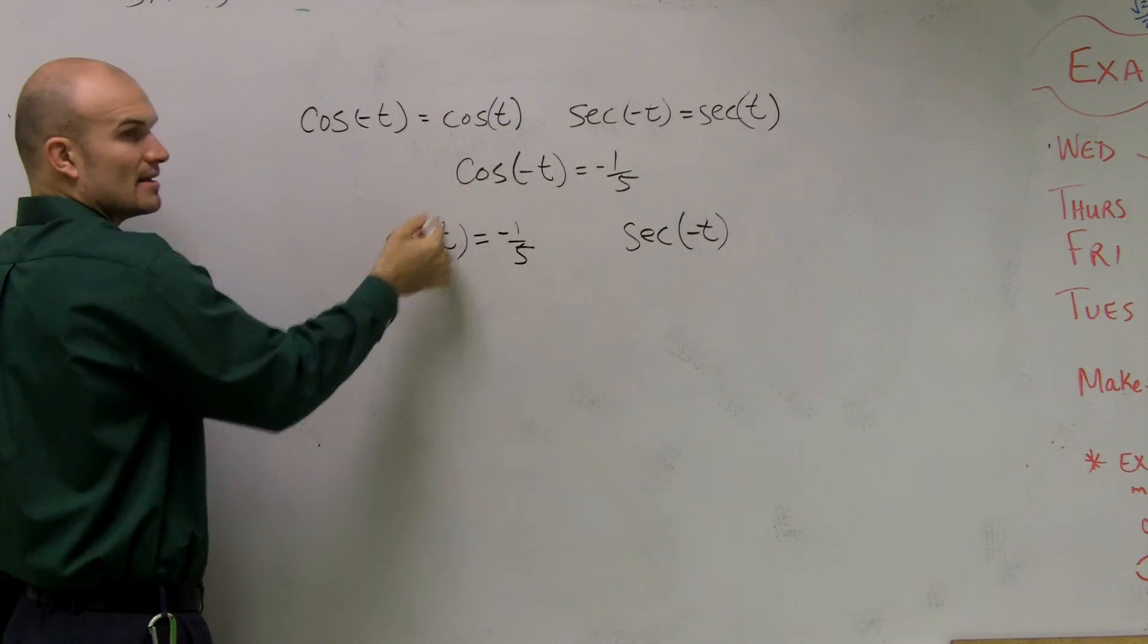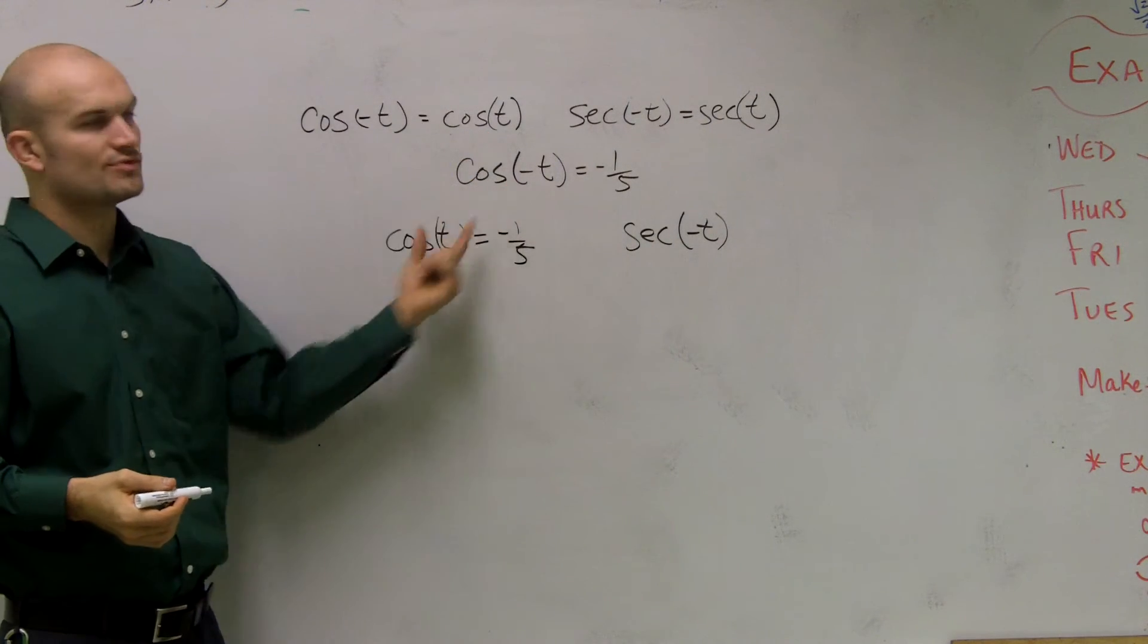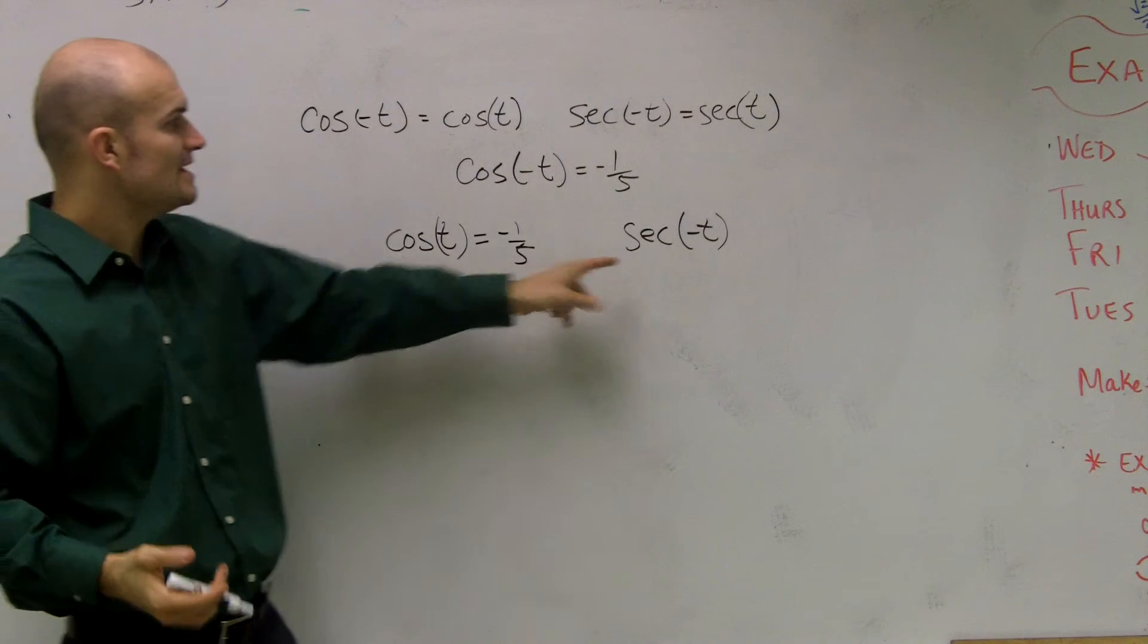Because it says these two are equal to each other. So this is the same thing as that, right? There's no difference. It says they're equal to each other. So just rewrite the same thing. Now, secant of negative t, remember,